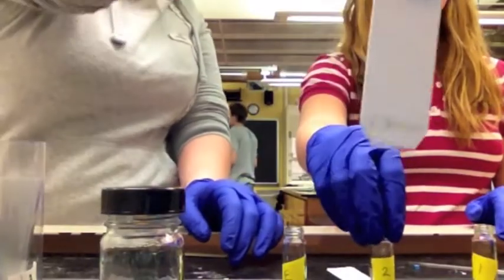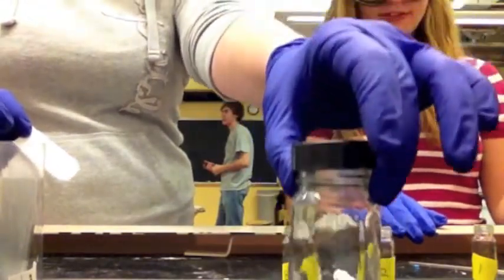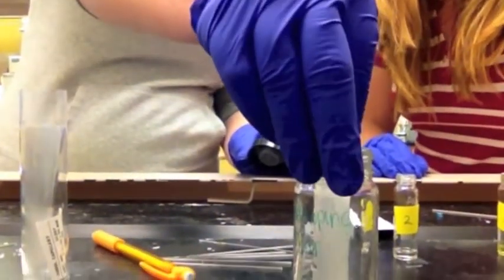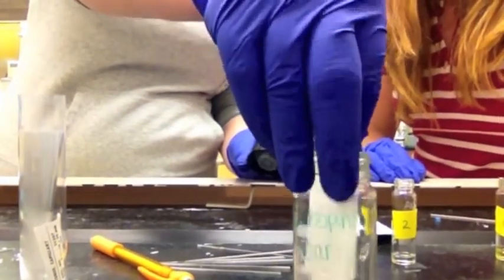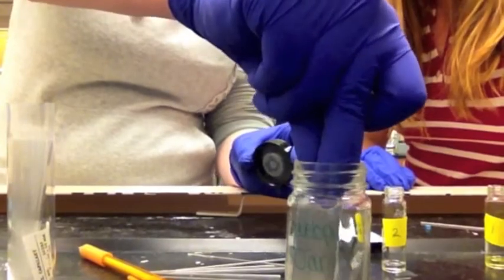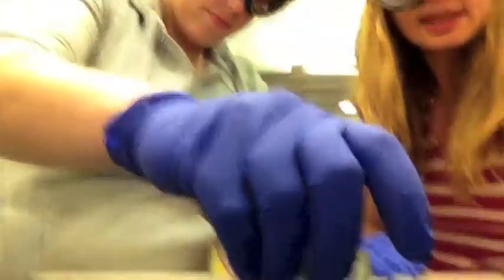Now the plate is dotted. Now we are ready to develop our plate. Here is our developing jar. We have placed a solvent in the bottom, but it does not come past your starting line. We carefully place it in the jar, lean it back, put the cap on.